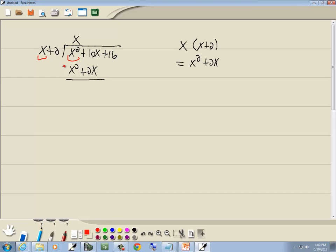Which means flip signs, so this becomes negative, this becomes negative. x squared minus x squared drops away, 10x minus 2x gives us 8x, and I'll bring down the plus 16.